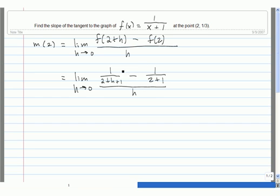The next thing we do is simplify the numerator. We'll start with the first piece. 1/(2+h) + 1 is really 3+h, so we get 1/(3+h), minus 1/2 + 1, which is 1/3, and then divide by h.